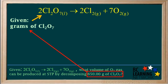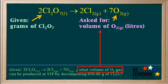We analyze the problem for what's given and what we're asked for. We see that we're given the grams of Cl2O7 decomposed, and we're asked for the volume of O2 gas produced. The volume of the gas can be measured in liters.